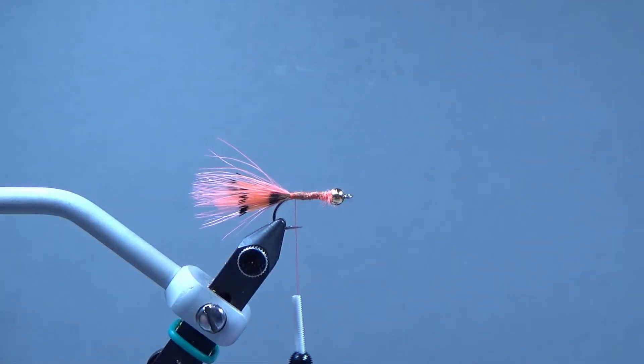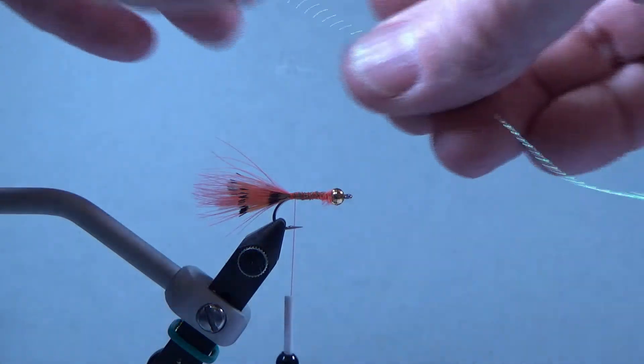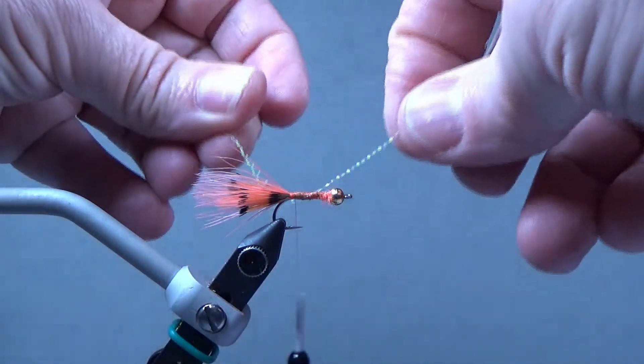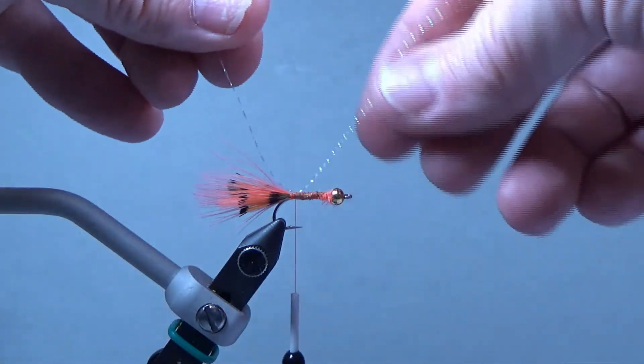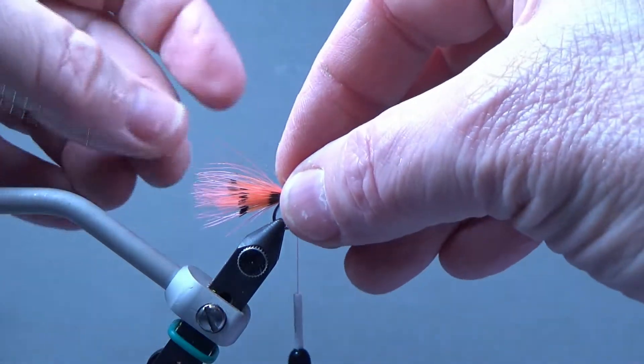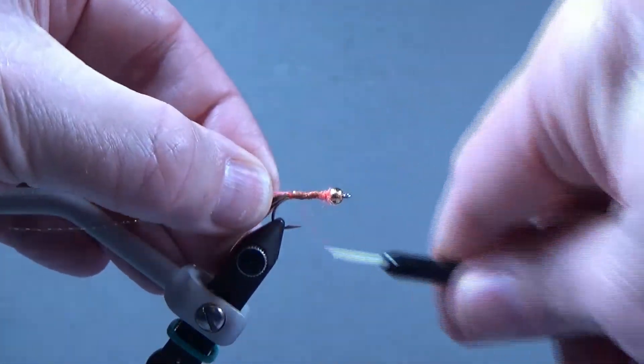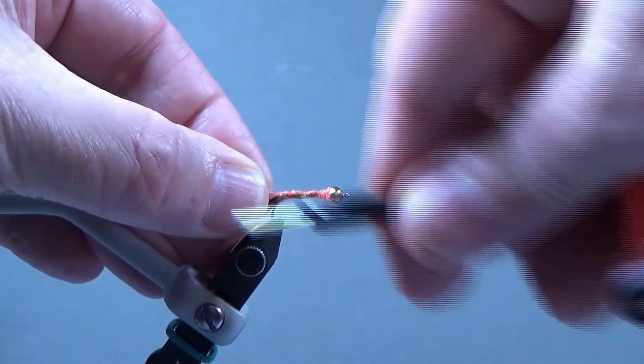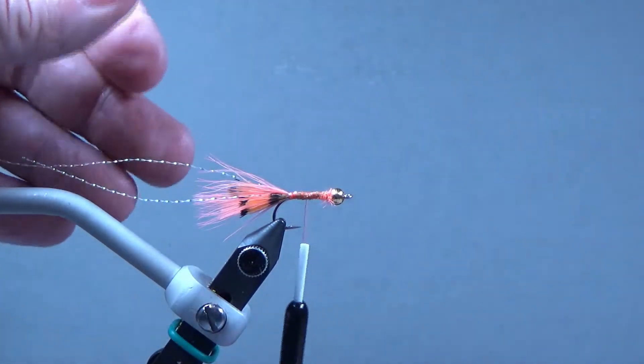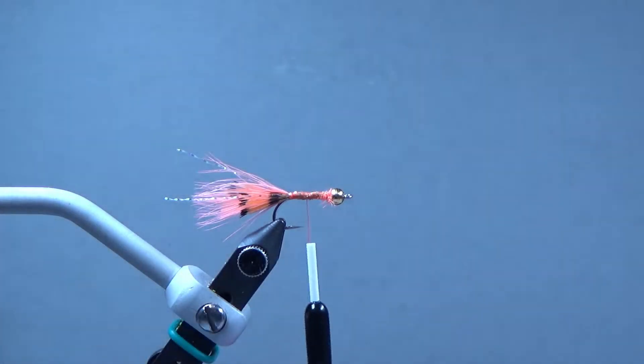Now we'll take a single strand of crystal flash, tie it right up here on top. And this will be like the antenna and air bubbles. So we'll just cut those just a little bit longer than the tail itself.